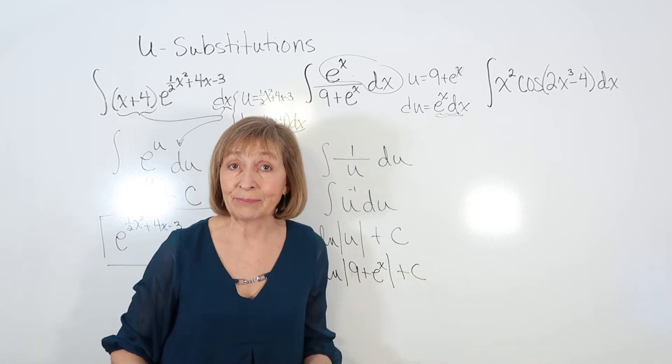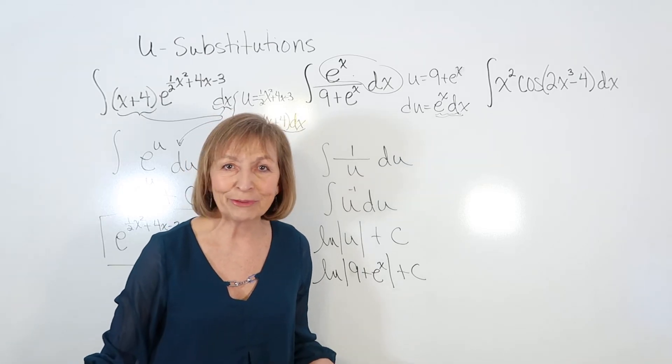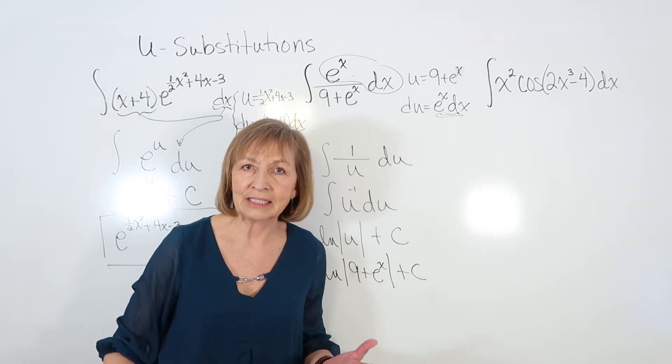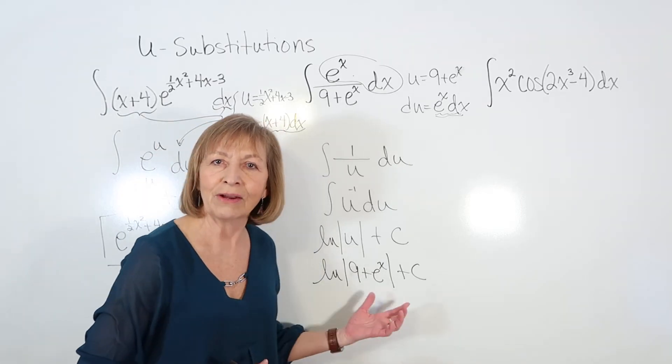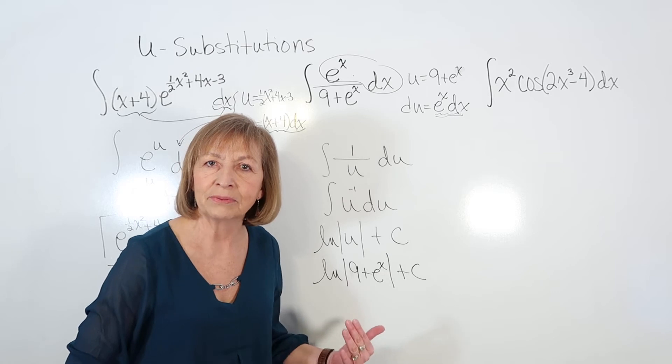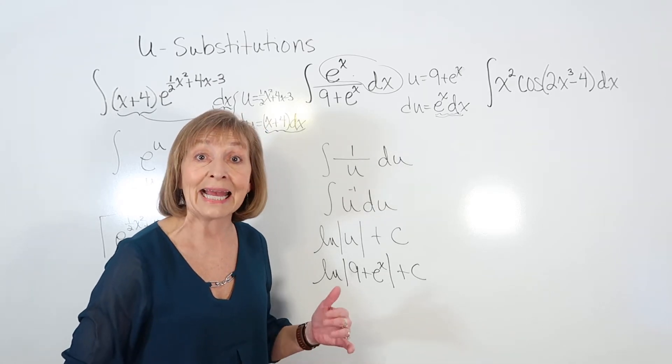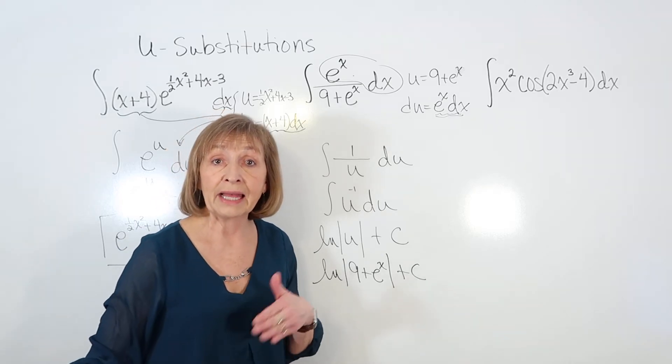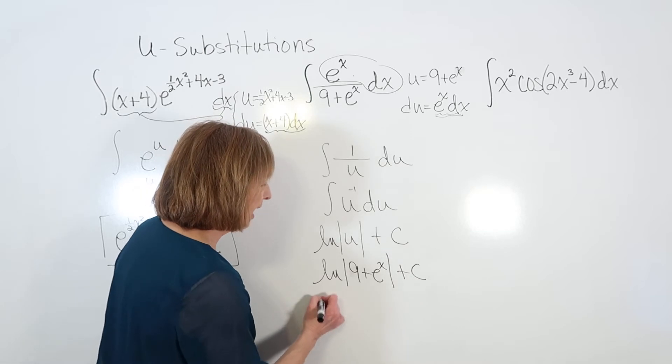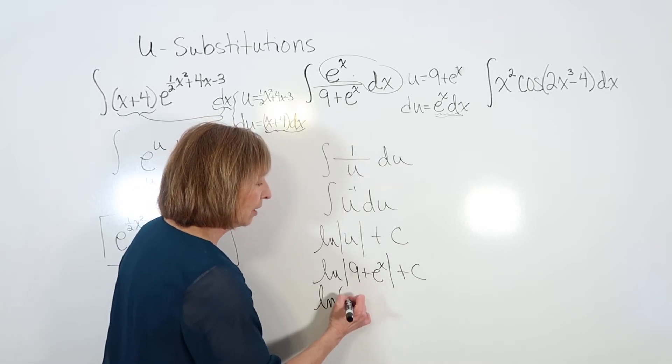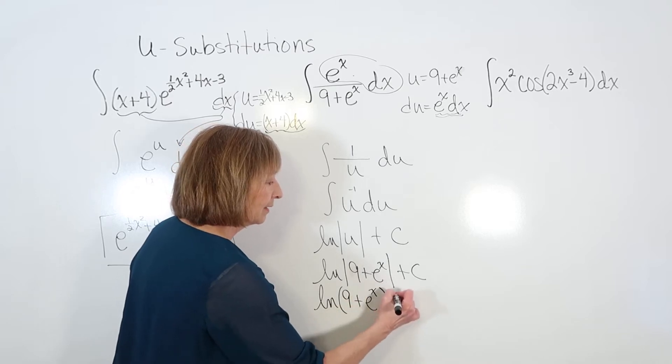And I, in general, need the absolute value. However, if I have an expression that can never be negative, then it's redundant to write the absolute value. So I always kind of take a little look at it and see, are there any values of x where 9 plus e^x would be negative? And the answer to that is no. Remember, e^x is always positive. So 9 plus something always positive will always be positive. So I can write this specific one as the natural log of the quantity 9 plus e^x plus c.